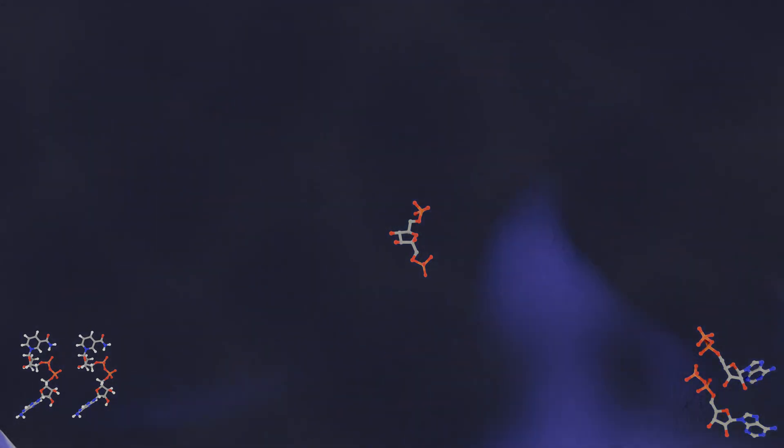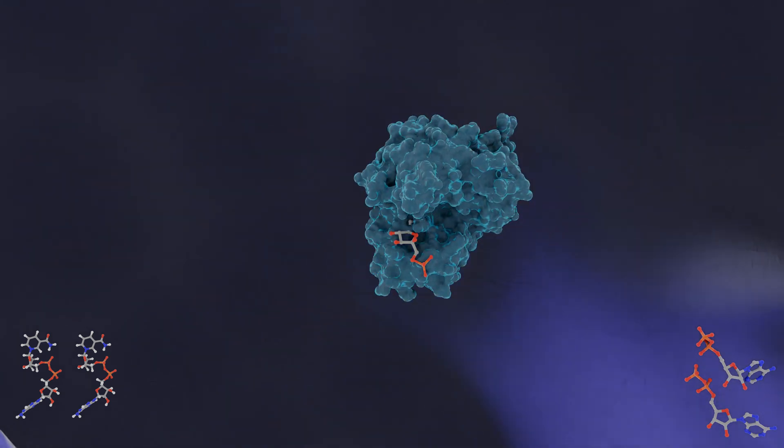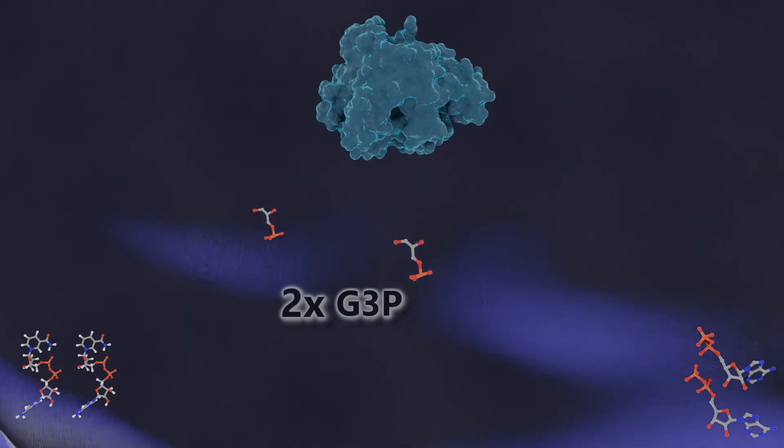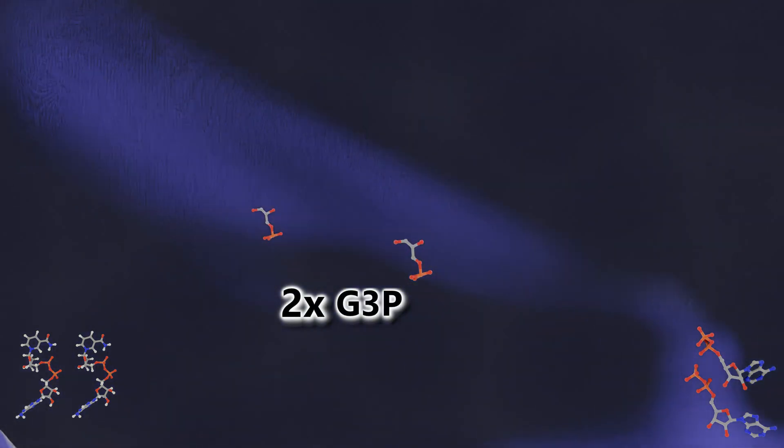At this point, we can see the altered glucose molecule being split in half, which produces two G3P molecules.